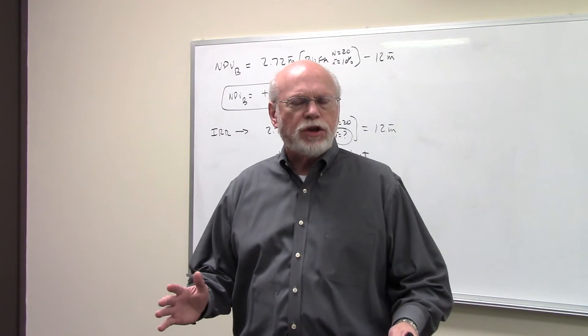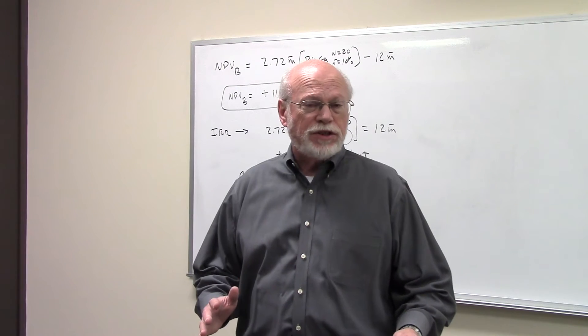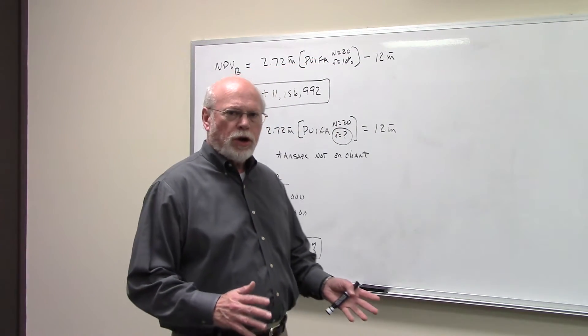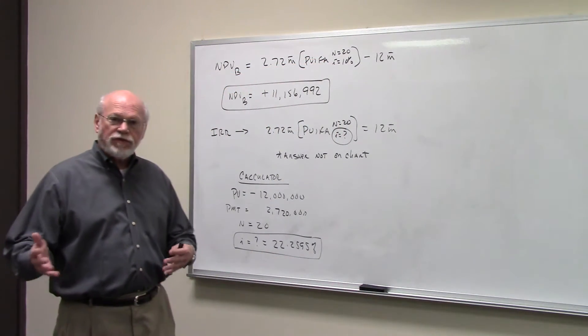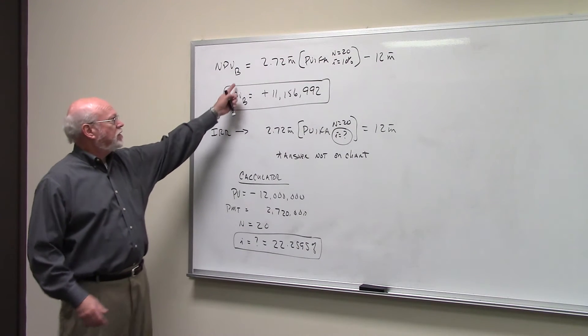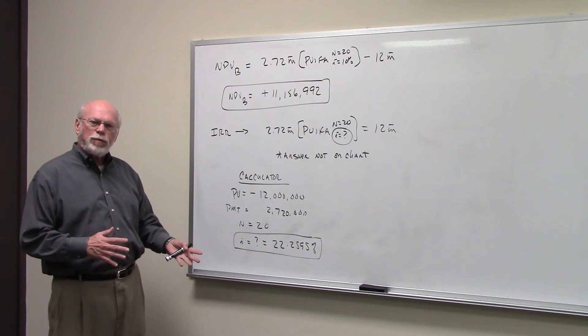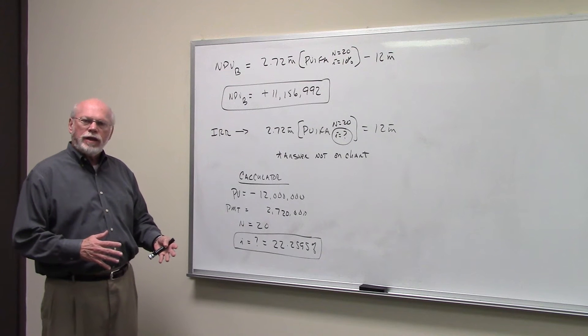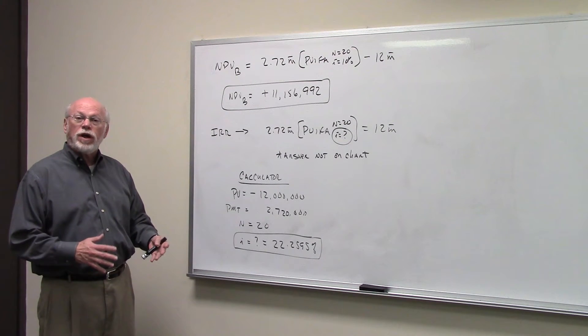Now, this problem also asks us to calculate the net present value and the internal rate of return for a mutually exclusive project called Project B. In the previous part, we calculated the net present value and internal rate of return for Project A.